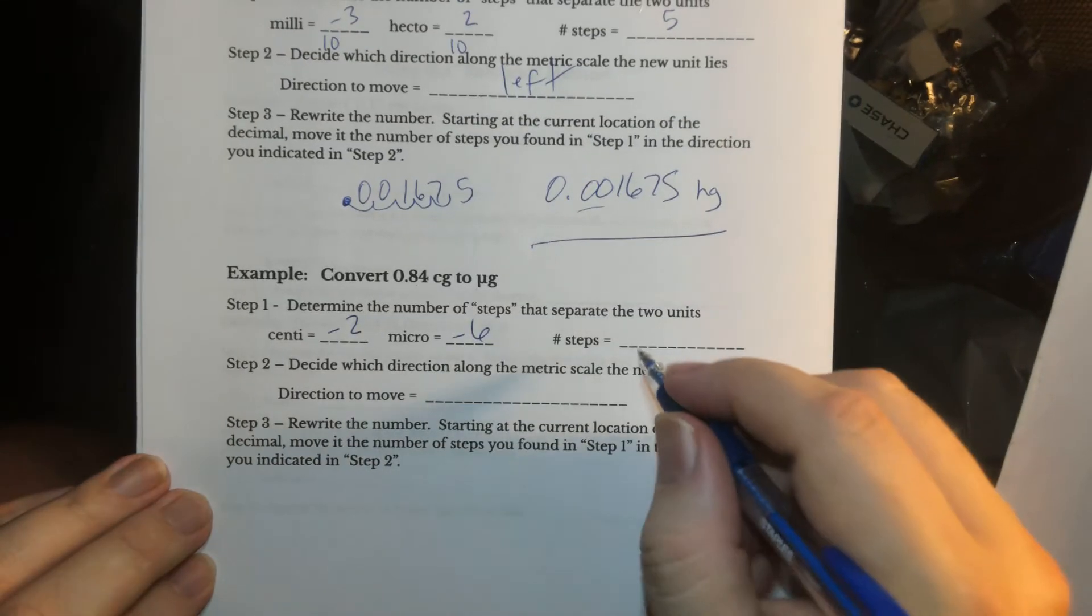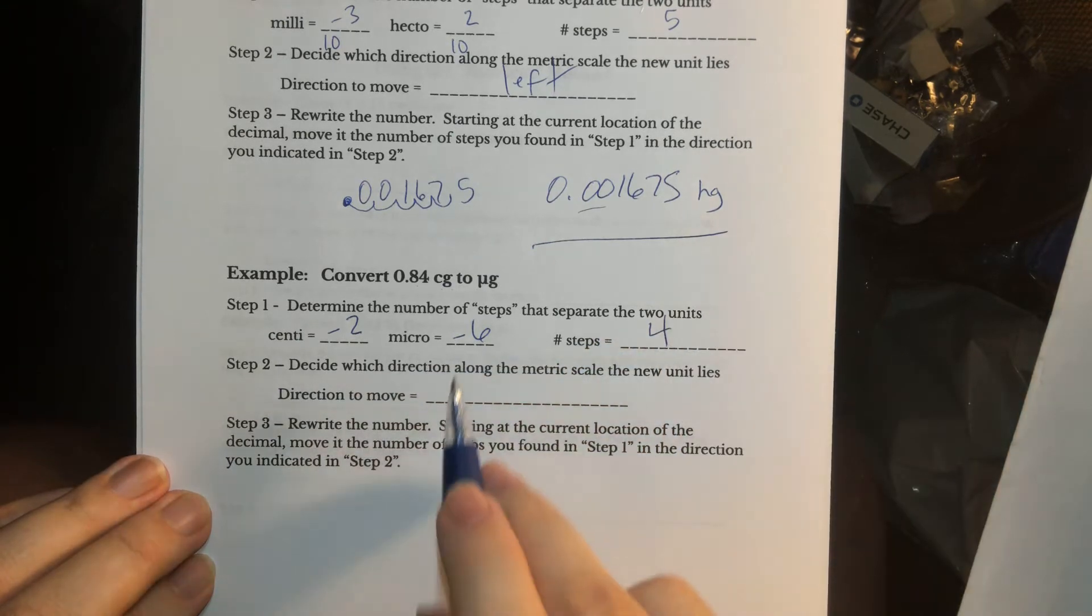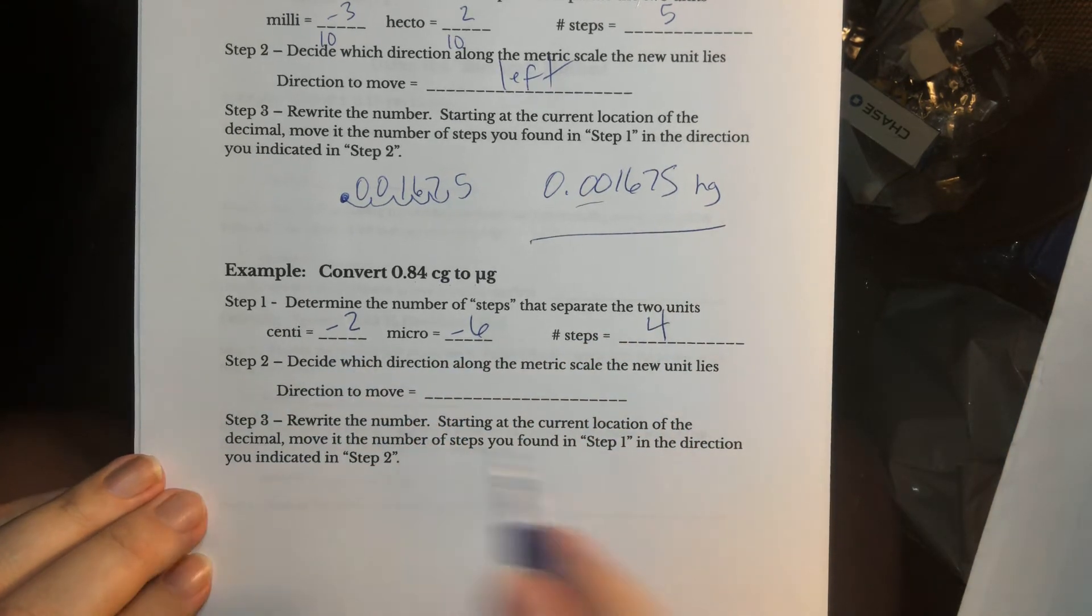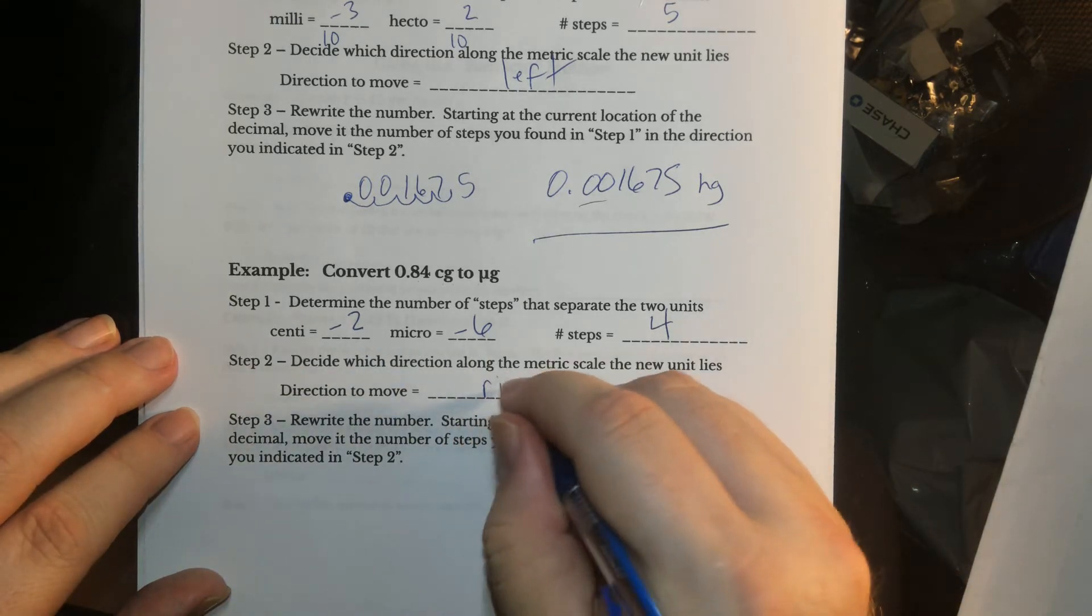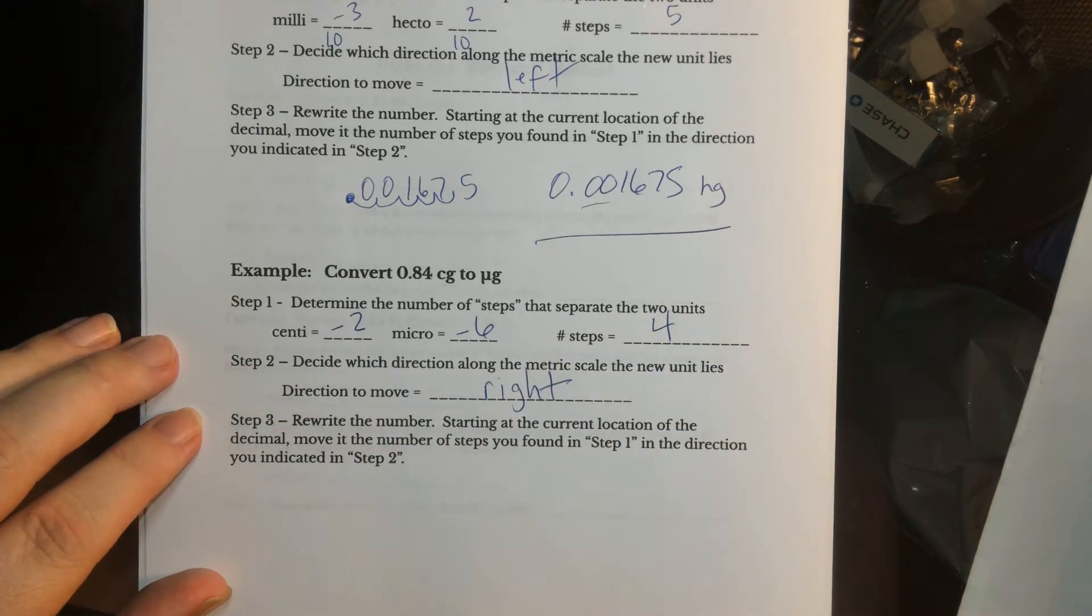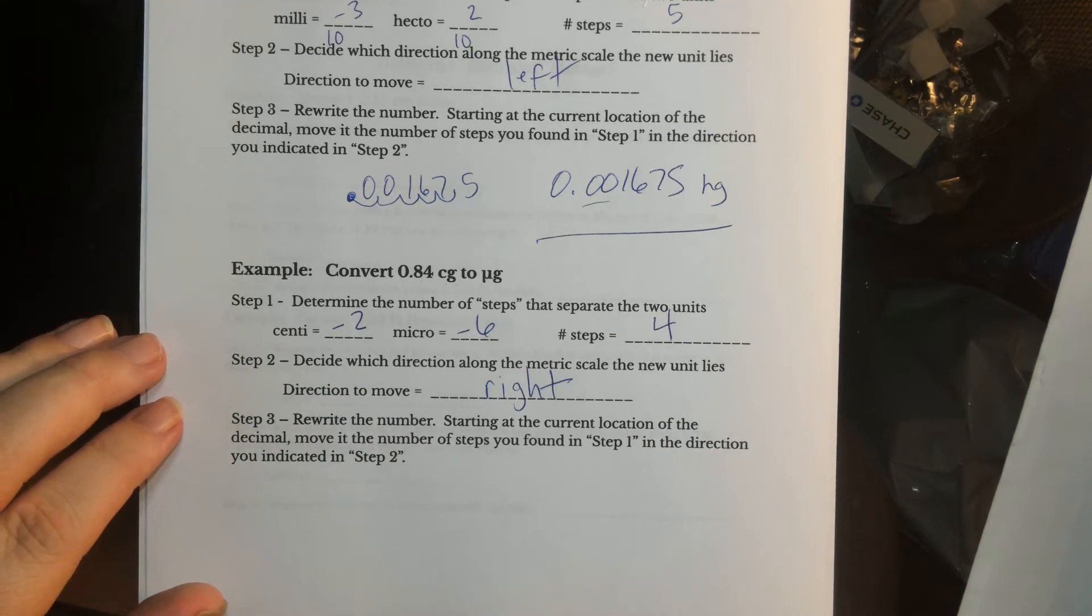So that is going to be just four steps, minus six minus a negative two, that's four steps. Now if you look at your metric scale, you'll see that you go a different direction this time. It'll be to the right. If you need to hit pause and verify that to yourself, please do so.